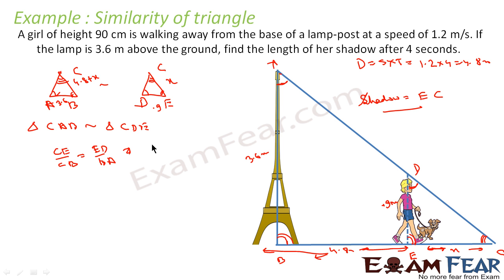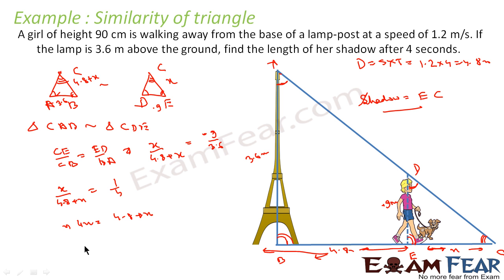Solving: 4X equals 4.8 plus X, so 3X equals 4.8, giving X equals 1.6 meters. The length of the shadow is 1.6 meters. I drew the triangle and then used the similarity concept to find the value of X.